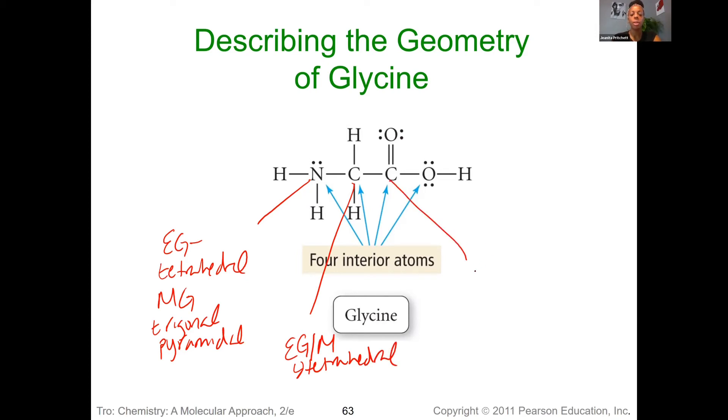For this carbon, again, the electron geometry and molecular geometry will be the same, no lone pairs, three bonding regions. That will be trigonal planar, meaning it's flat.